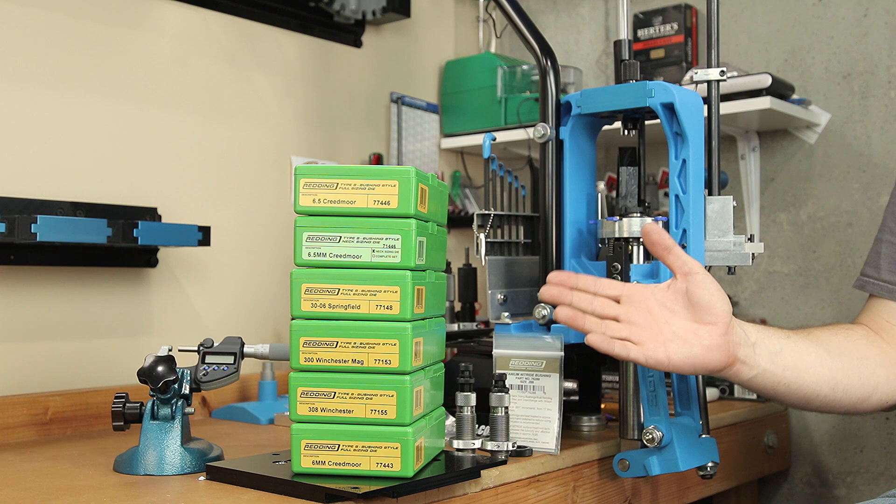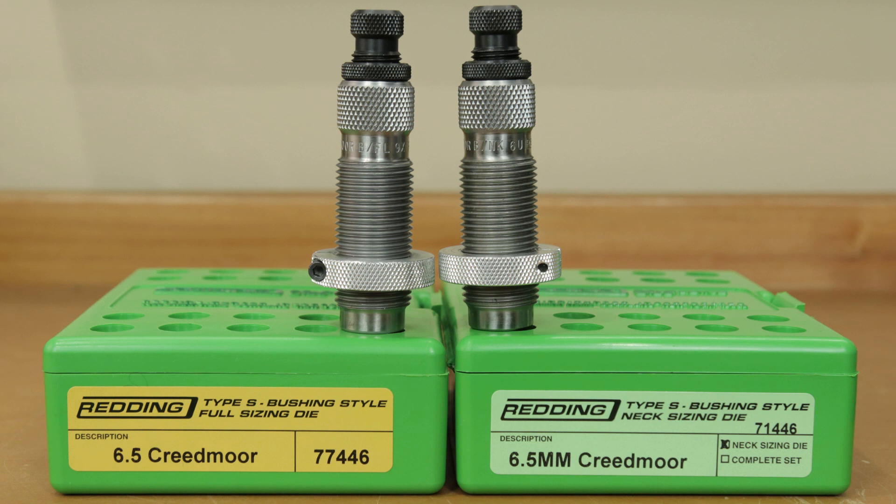Let's start by taking a quick look inside the S die. These dies are available in two different flavors, not chocolate and vanilla, but a Type S full-length sizing die, as well as a Type S bushing neck sizing die.